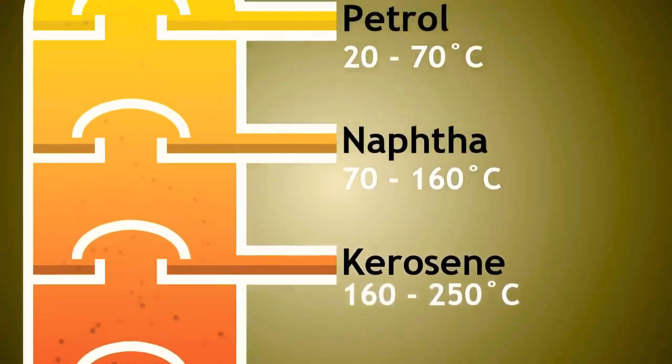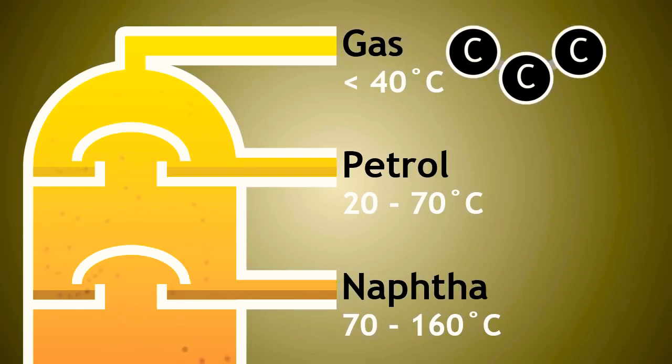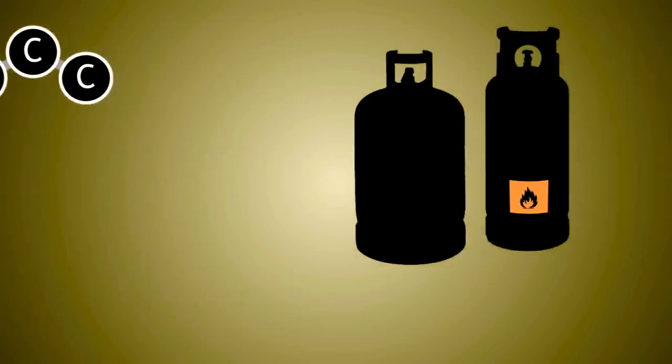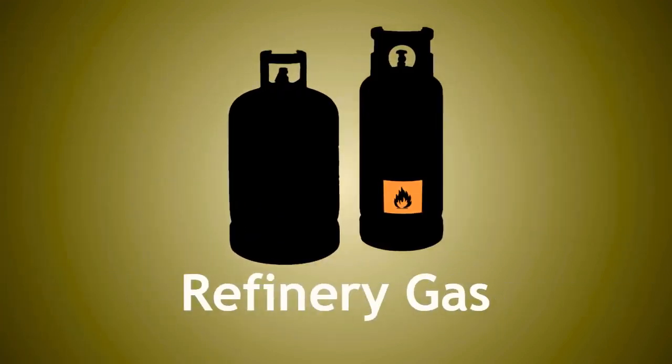Some of the smallest molecules are between one and four carbons in length. This fraction has such a low boiling point that it is still a gas when it is removed from the very top of the fractionating column. This fraction is known as refinery gas or bottled gas.